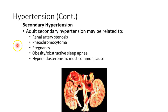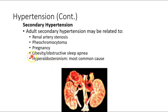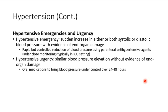Secondary hypertension causes include renal artery stenosis, pregnancy, obesity with sleep apnea, and hyperaldosteronism — recall aldosterone causes water retention with sodium and potassium excretion. One of my favorites: pheochromocytoma — a secreting tumor of the adrenal medulla that releases epinephrine and norepinephrine, which are part of short-term blood pressure regulation.